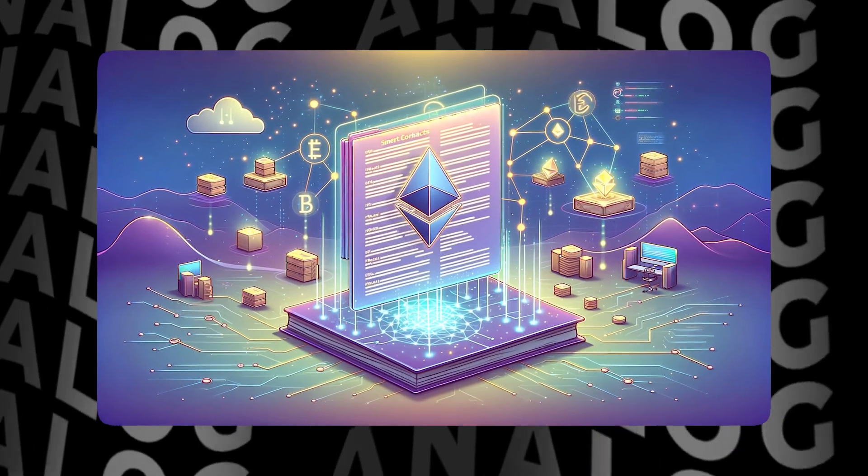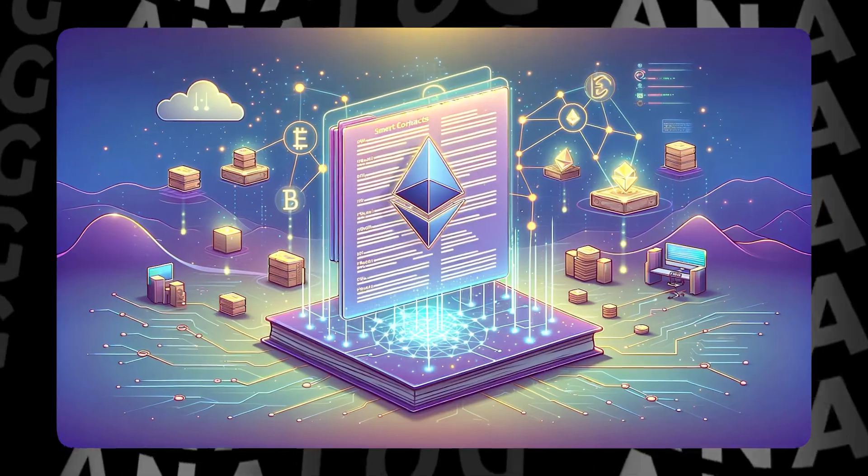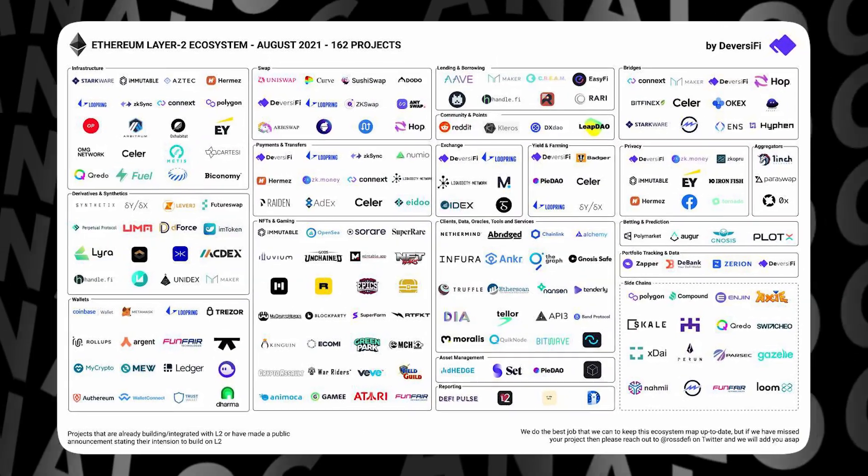On the other hand, developers could build on existing platforms such as Ethereum. While this approach reduced development time and complexity, it had its limitations. Projects built on these platforms were constrained by the blockchain architecture, which could stifle innovation and limit the development potential of decentralized applications.